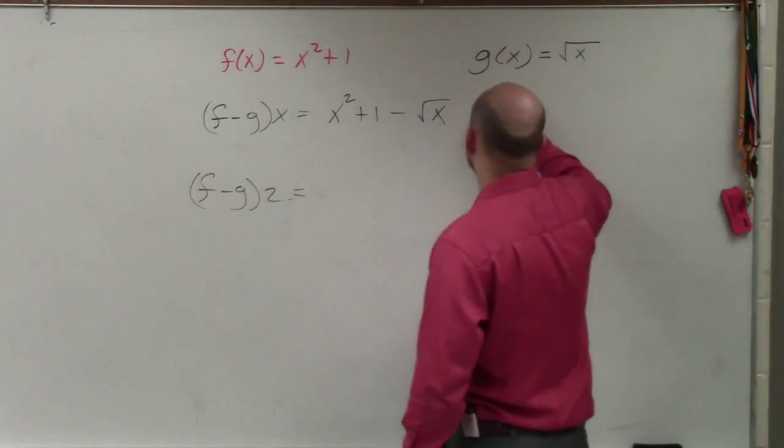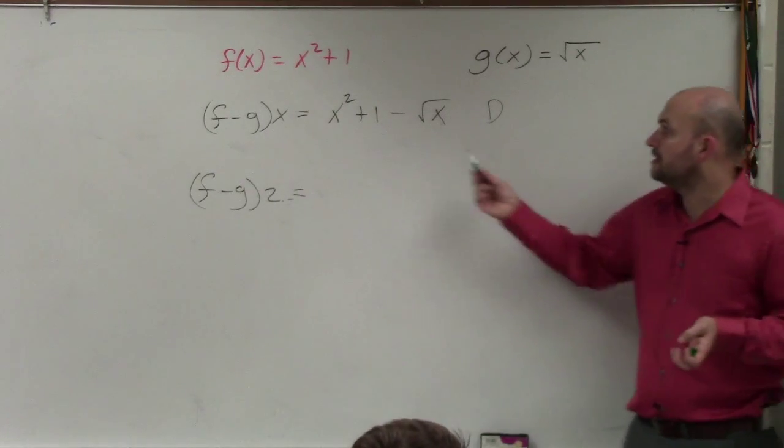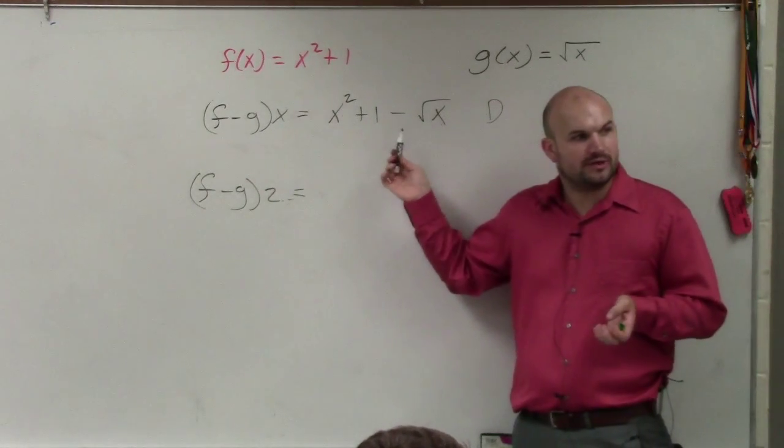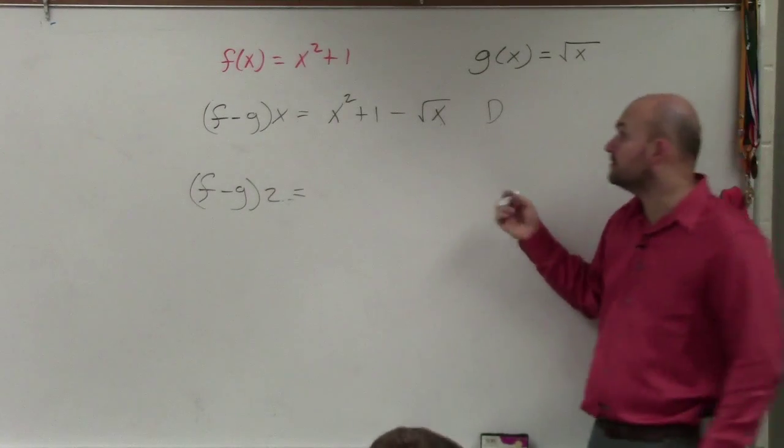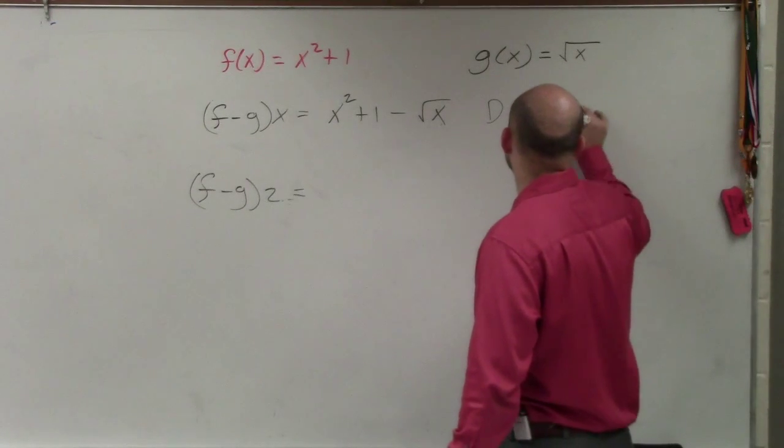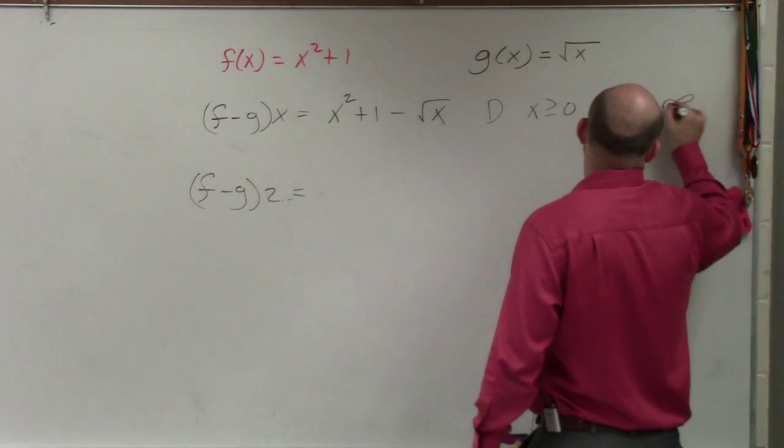So now we go to the domain. Is there any numbers that we cannot plug into our rule and get an output? Again, the domain is going to be the same. We can't plug in any numbers that are less than 0. So x has to be greater than or equal to 0, or you could write it as 0 comma infinity.